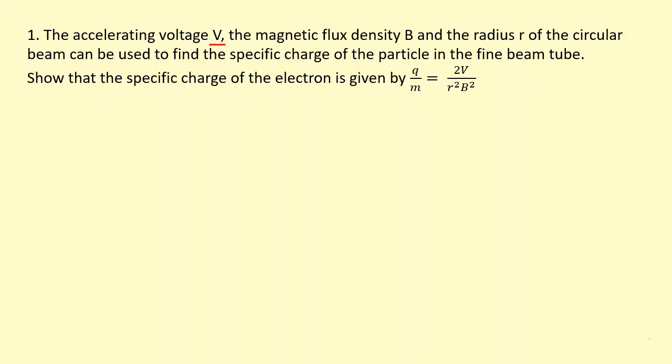Measuring the voltage used to accelerate the electron, the magnetic flux density, and the radius will allow me to find the specific charge of the electron, the charge divided by the mass. The work done by the accelerating voltage equals the kinetic energy gained, and when it's doing circular motion, the centripetal force is provided by the magnetic force.